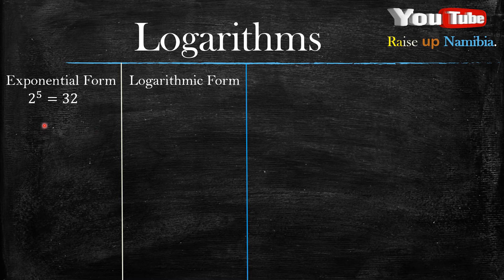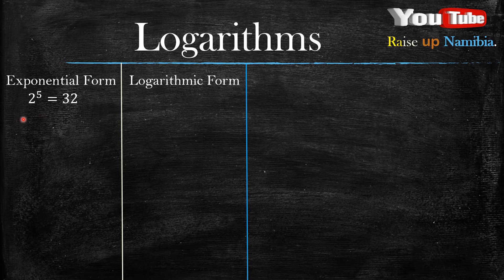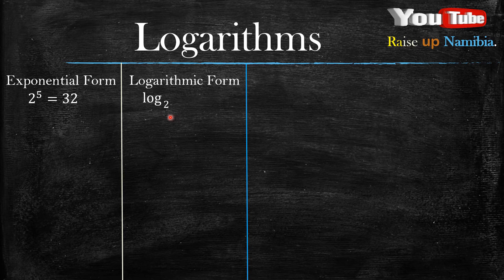Say for example you have something like this. From our background knowledge from indices, we know that 2 is a base raised to the power of 5, meaning this 5 is our exponent and this 2 is our base. Now in logarithmic form our base does not change — our base stays the same. So to change this into logarithmic form, first we write the word 'log' and then ask yourself what is our base. It's 2, so we write the base as 2.